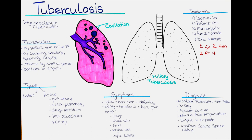Extrapulmonary tuberculosis affects other parts of the body, such as the kidneys, spine, or brain. Symptoms depend on which part of the body is affected. Drug-resistant tuberculosis occurs when the bacteria that cause tuberculosis are resistant to one or more of the antibiotics used to treat the disease. Drug-resistant tuberculosis is more difficult to treat and can require longer treatment with different antibiotics.